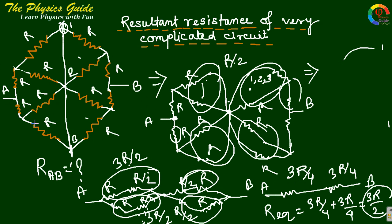So we can solve various types of complicated circuit problems to find the equivalent resistance. The key thing you have to check is the symmetry — if there is symmetry between the two sides, you can use this simplification method.